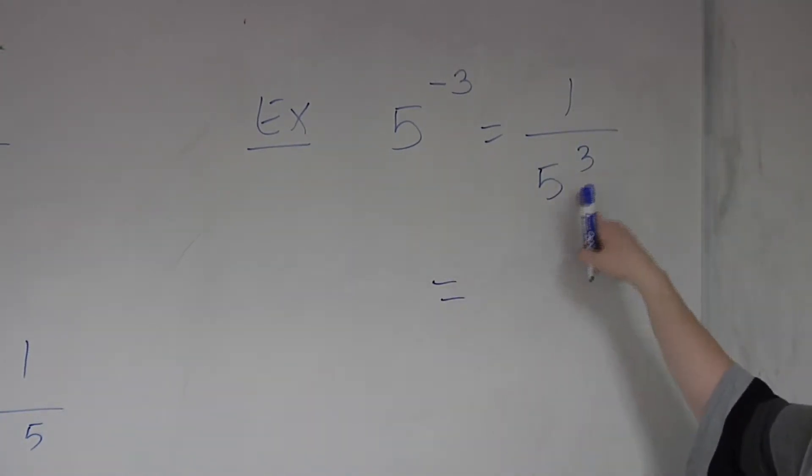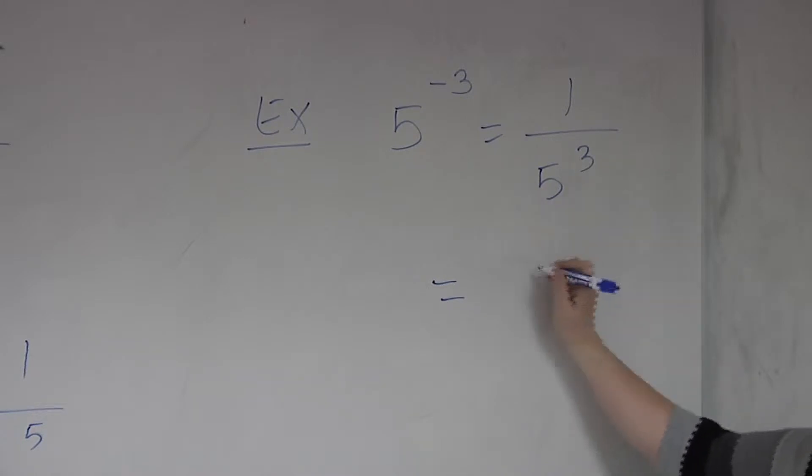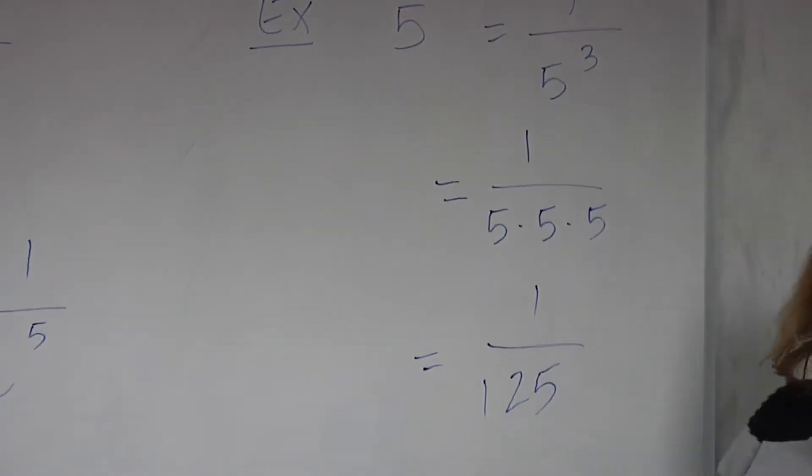So the power of 3 is only attached to the 5, right? So you only have 1 on the top, the numerator, but you have three 5s on the denominator. So what's 5 times 5? Times 5 again. So you're looking at 1 over 125.